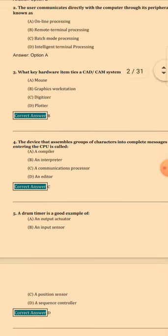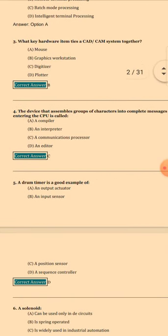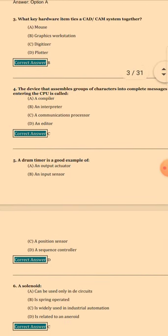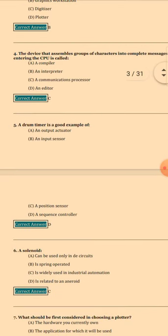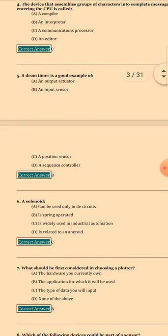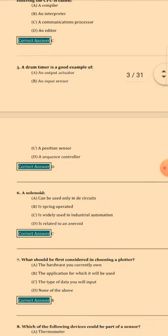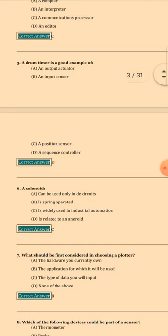Question 5: A drum timer is a good example of — the answer is option D: A sequence controller. Question 6: A solenoid — the answer is C — is widely used in industrial automation.